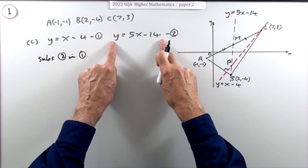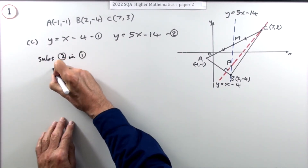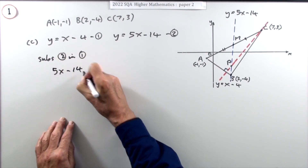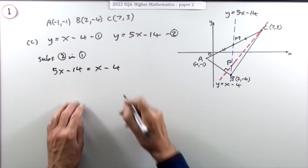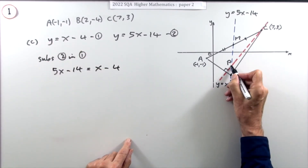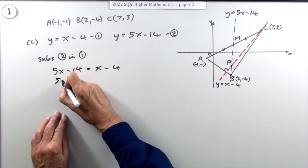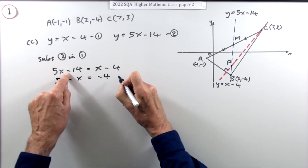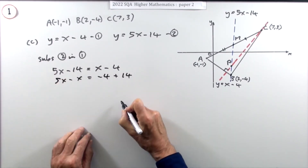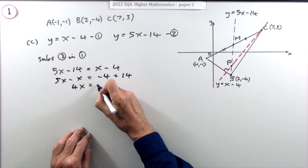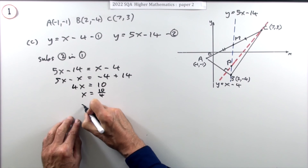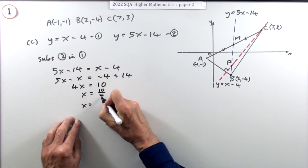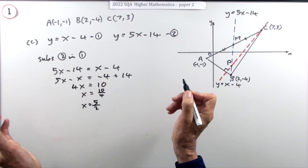Substituting equation two into equation one to avoid negatives: the y coordinates must be equal at the intersection, so x − 4 = 5x − 14. Rearranging: 5x − x = −4 + 14, giving 4x = 10, so x = 10/4 = 5/2 or 2.5.